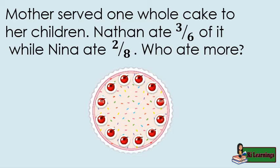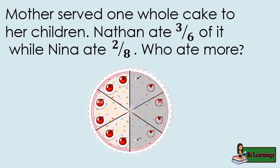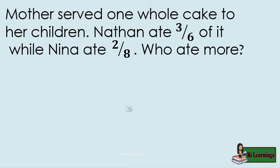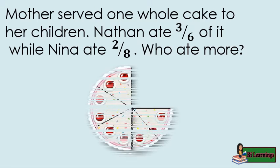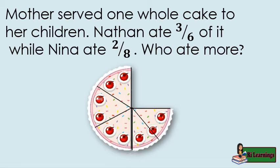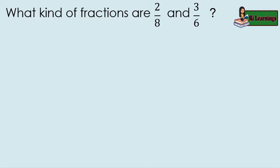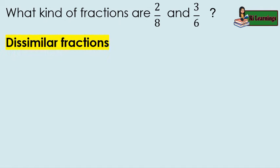A mother served one whole cake to her children. Nathan ate three-sixths of it, while Nina ate two-eighths. Who ate more? What kind of fractions are two-eighths and three-sixths? Correct — they are dissimilar fractions.